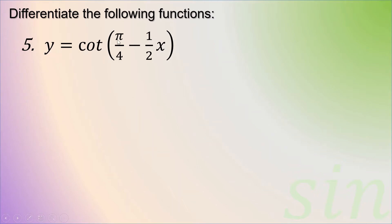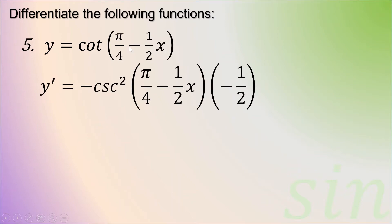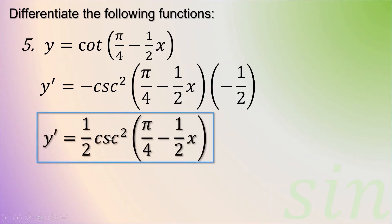Fifth example: y is equal to cotangent of pi over 4 minus 1 half x. The derivation of cotangent is negative cosecant squared, so we copy u which is pi over 4 minus 1 half x, then multiply by the derivation of u which is negative 1 half. Simplifying, that gives positive 1 half times cosecant squared of pi over 4 minus 1 half x.